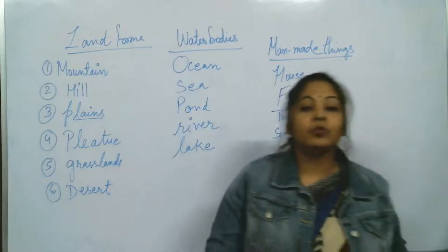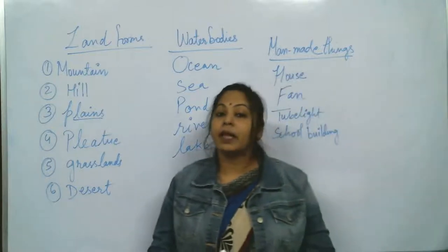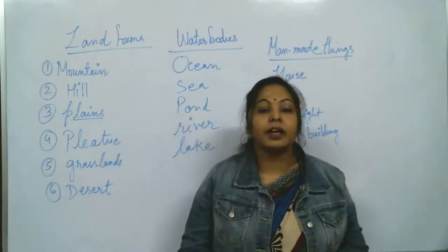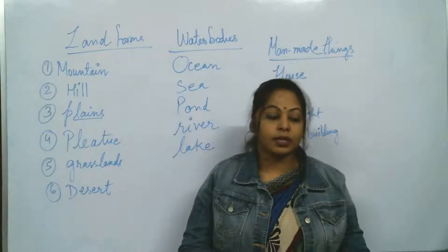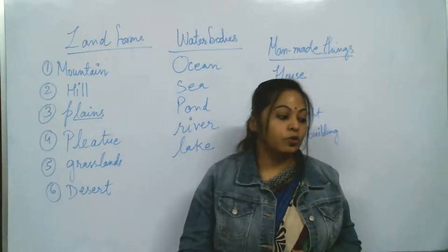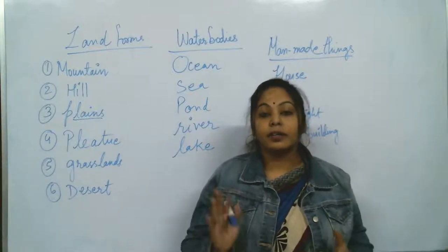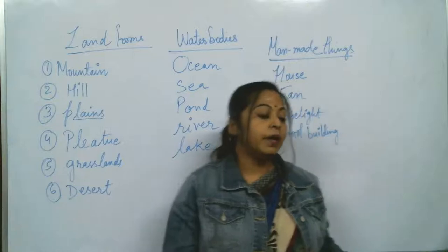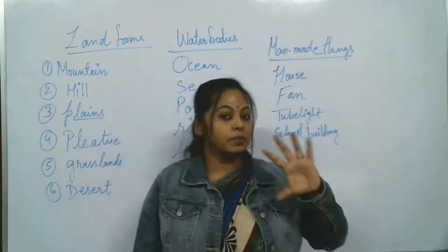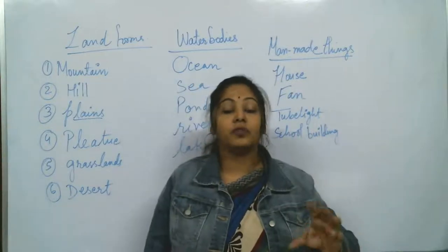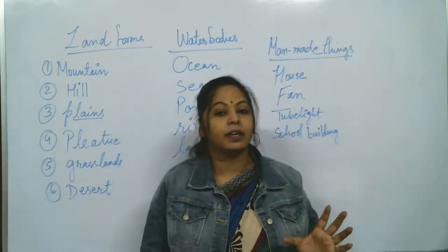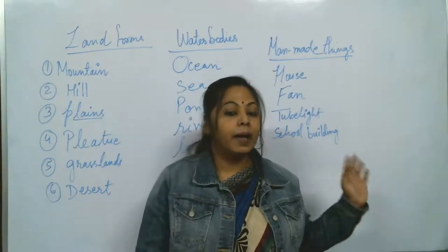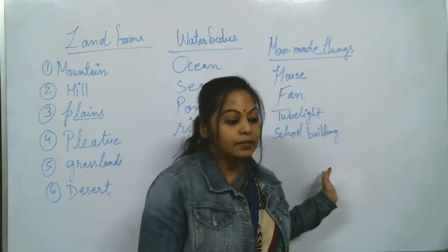Sun, moon, star - these are natural things. Man-made things are those things you can see in factories - machines. Those are man-made things.